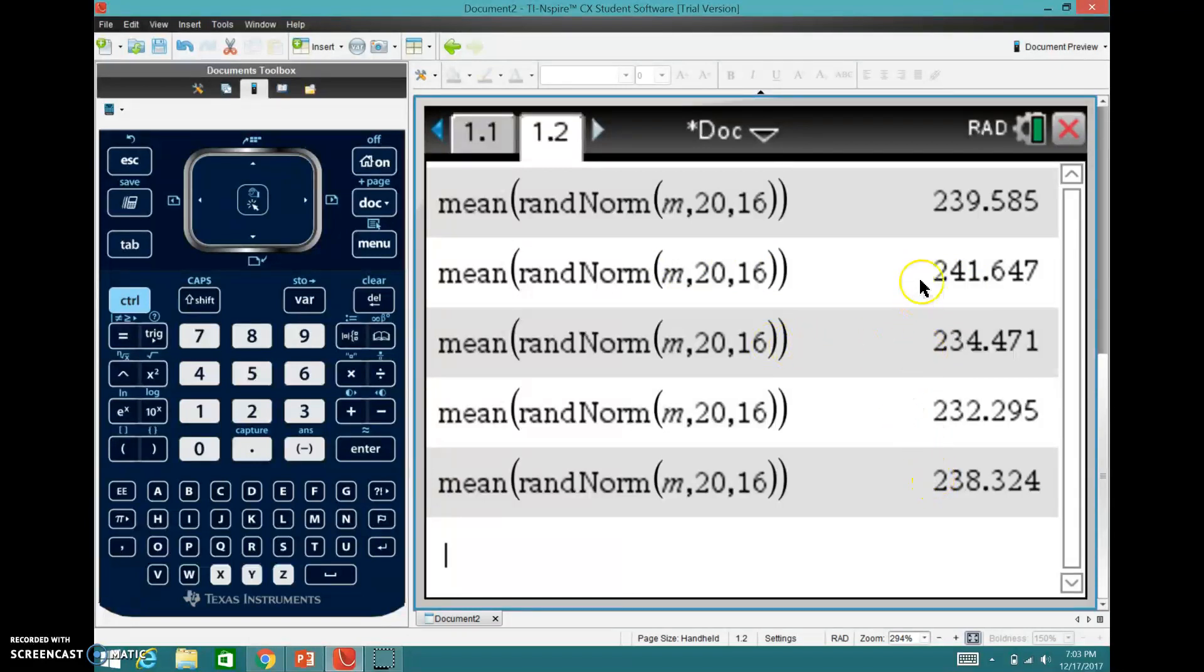And I think probably a good estimate maybe might be to simply take all of these values and find the mean of the means. Because we should be able to get closer and closer then to our true population mean over time, and especially if we did more and more of these. So that's kind of the idea.